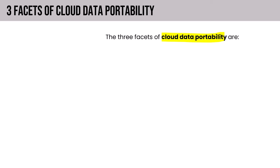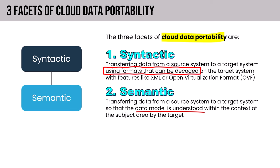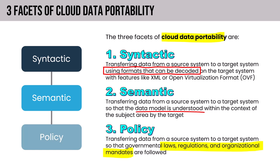The three facets of cloud data portability are: syntactic — transferring data using formats that can be decoded on the target system with features like XML or open virtualization format; semantic — transferring data so the data model is understood within the context of the subject area by the target; and policy — transferring data so that governmental laws, regulations, and organizational mandates are followed. If you want interoperability and portability, you need to pick cloud service providers that offer services using open and standard communication formats like XML, JSON, and HTTPS.